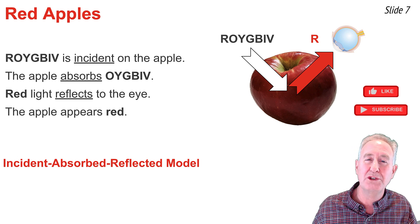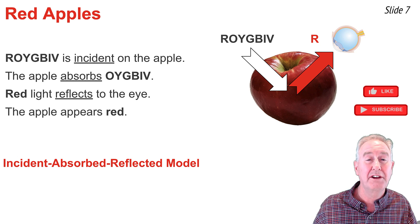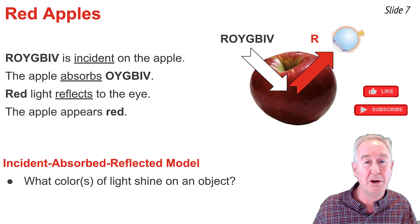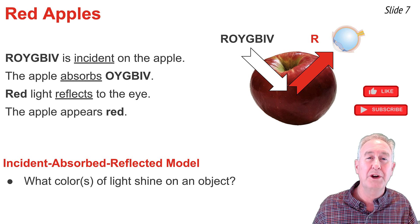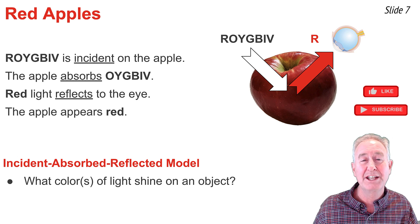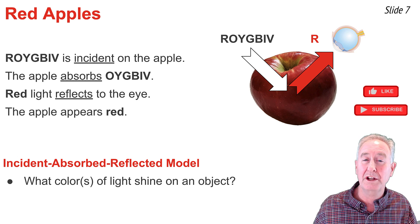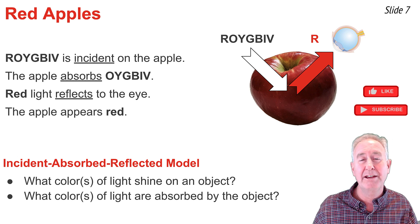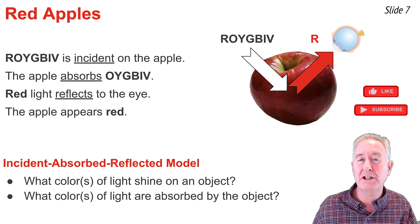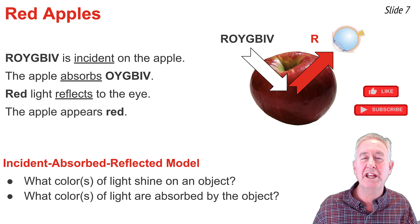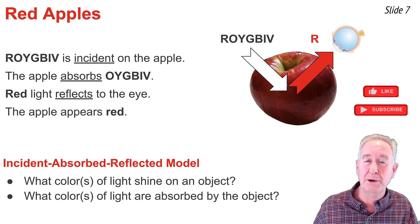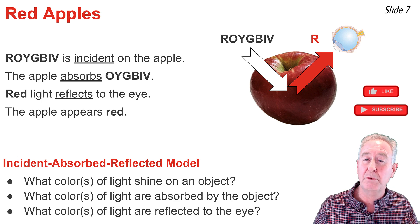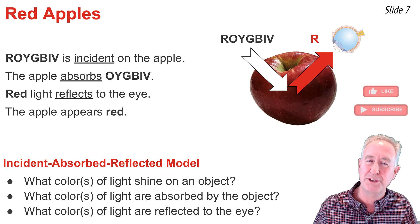There are always three questions you must ask. First, what colors of light are shining — or incident — upon the object? Second, what colors of light are absorbed by the object? If you can answer these first two questions, you can answer the third: what colors of light are reflected to the eye?